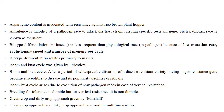Boom and burst cycle was described by Priestley. After a period of widespread cultivation of a disease-resistant variety having a major resistant gene, the variety becomes susceptible to disease and its popularity declines drastically. The variety reaches a boom stage and once it loses its resistance power due to a single gene, it becomes a burst. Boom and burst cycle arises due to evolution of new pathogen races in case of vertical resistance.